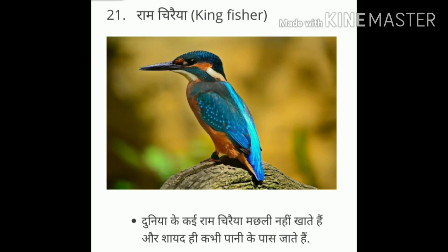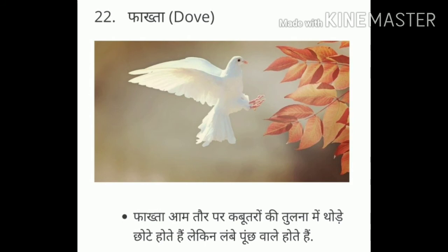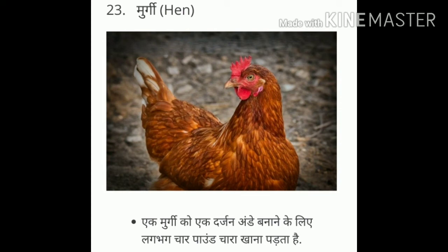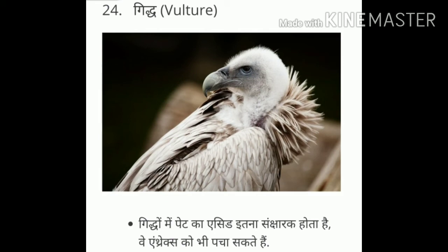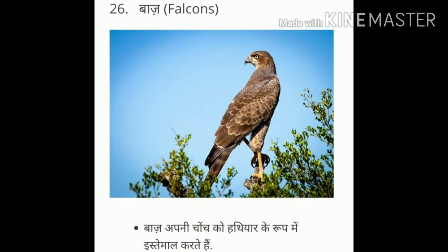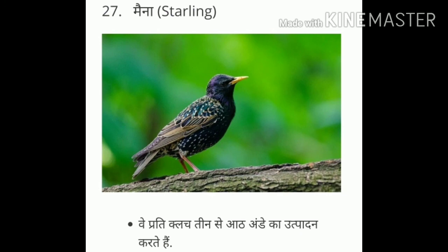Twenty-two, Bhakta — dove. Twenty-three, Murgi — hen. Twenty-four, Gidh — vulture. Twenty-five, Butter — quail. Twenty-six, Baj — falcon. Twenty-seven, Mana — starling.